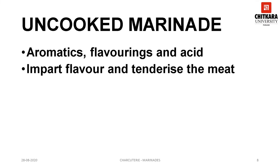An uncooked marinade is a mixture of aromatic vegetables like carrot, shallots and onion; flavorings like garlic, parsley and bouquet garni; acid like wines and vinegars; and seasonings. It is commonly used for meat and game. An uncooked marinade can be used immediately as it requires no cooking.